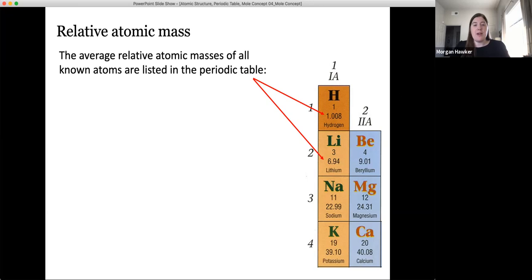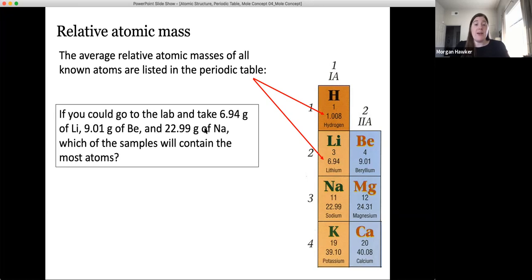To better understand, let's ponder the question. If you were in a lab and you had these specific masses of these three different elements: 6.94 grams of lithium, 9.01 grams of beryllium, and 22.99 grams of sodium, which of these samples would contain the most atoms? You'll notice that the numbers listed out front of each element, the masses, are seemingly very specific numbers. And if you investigate the periodic table more closely, you'll see that these numbers actually are the relative atomic masses of each element. It turns out that all of these samples contain the same exact number of atoms, but how many?